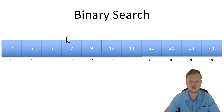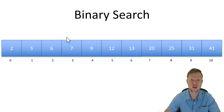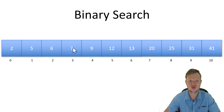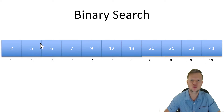Binary search works very well if you need to search for a specific value very quickly and the array or database is very large. However, the database or array must be sorted before you can do binary search. Looking at this array, we start with 2, 5, 6, 7, 9 up till 41 — you can see the array is sorted. Binary search will not work correctly if the array is not sorted beforehand.